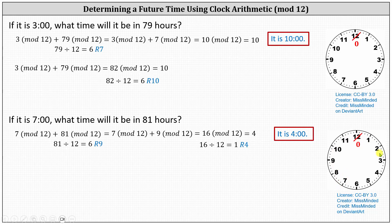We have 12, 24, 36, 48, 60, 72, then 73, 74, 75, 76, 77, 78, 79, 80, 81. And it's four o'clock.